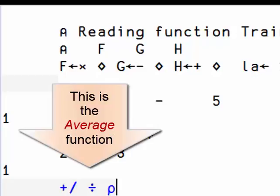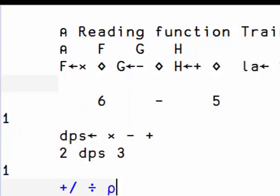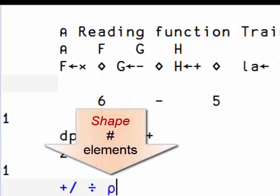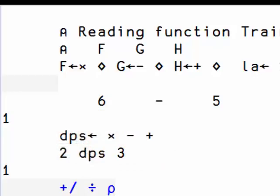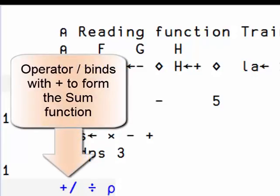This one is the average. It is a fork. It is the sum divided by the number of elements, the shape. Operators take precedence over trains, so that plus slash, a sum, is bound before the train.